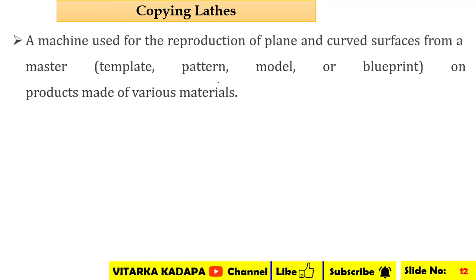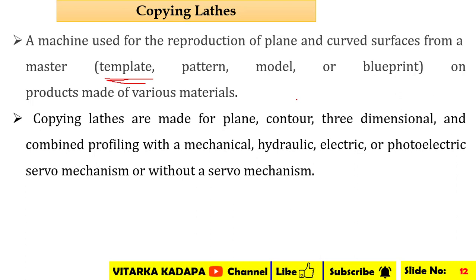Next we will discuss the copying lathe. In the capstan, turret, or engine lathe, we perform only one job at a time, and the operator has to repeat that job multiple times. In the copying lathe, we create a template of the sequence of operations. Based on that, we develop a blueprint, give it to the machine, and then proceed with the machining operations.